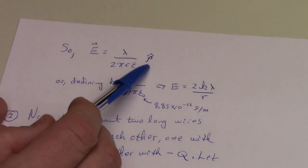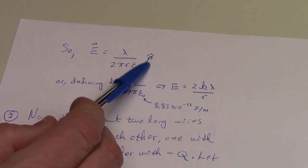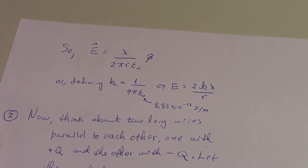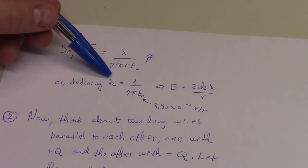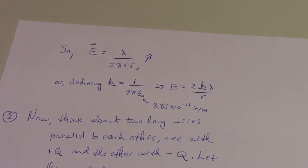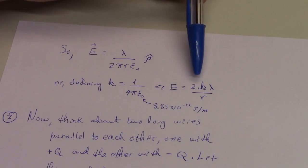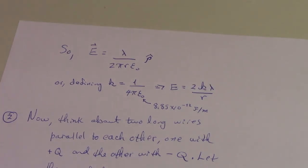This is a vector quantity, so it's a unit vector pointing outwards in the radial direction. Or if we define k to be 1 over 4 pi epsilon naught, we can say that E is 2k lambda over r. So we've done the first step, we've calculated the electric field due to a charged wire.